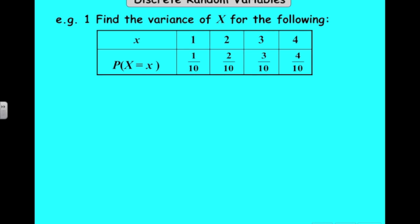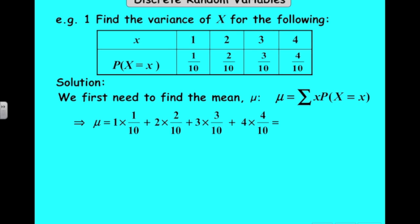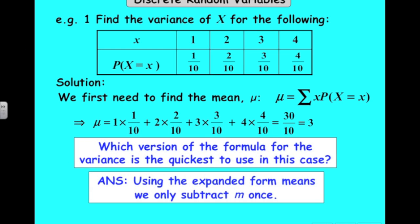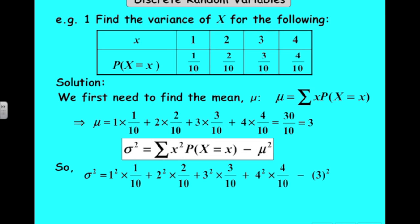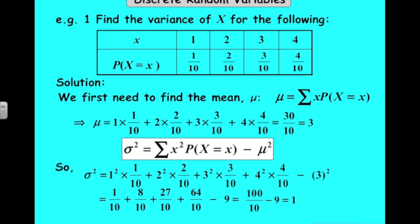Let's look at the formula for the variance. Finding the variance from this probability distribution, we find the mean first: 1 times 1 tenth, 2 times 2 tenths, 3 times 3 tenths, 4 times 4 tenths, add them all up, and we get 3. So the mean is 3. For the variance: 1 squared times 1 tenth, 2 squared times 2 tenths, 3 squared times 3 tenths, 4 squared times 4 tenths, minus the mean squared. Get your calculator out and you'll find that the variance here is 1.